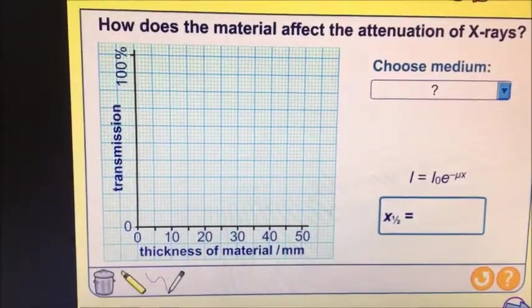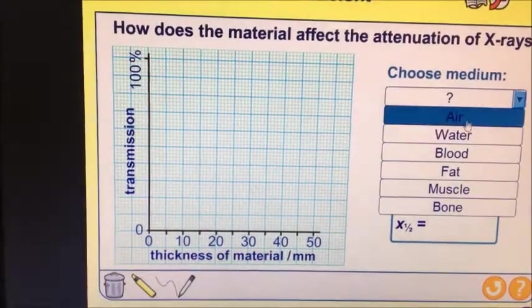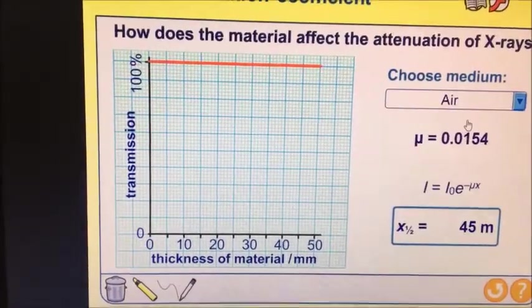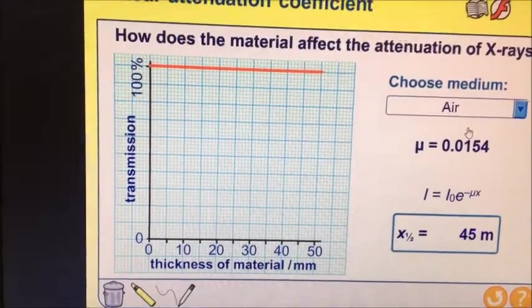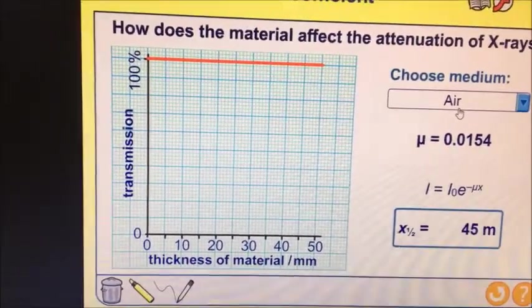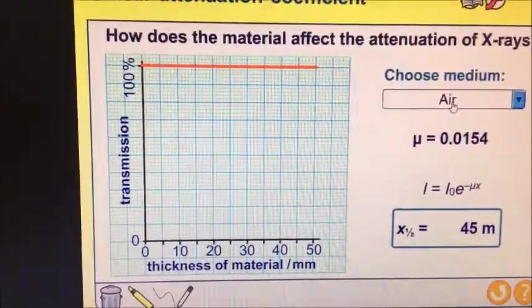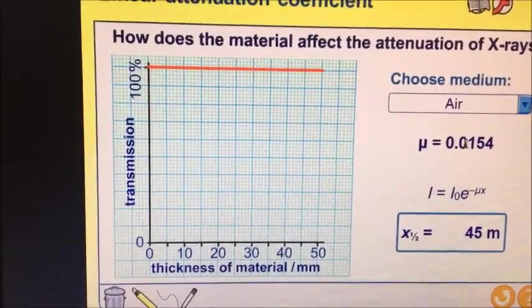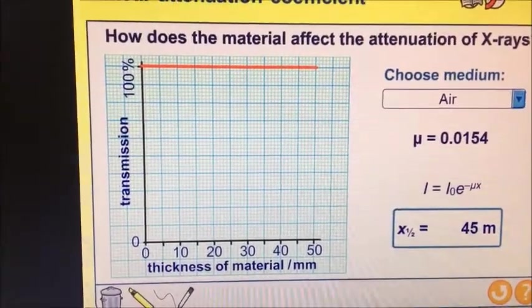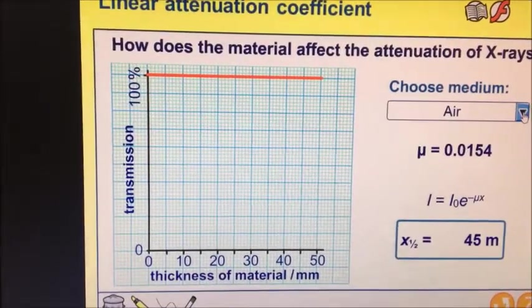So I'm going to start here by choosing air. Now, unsurprisingly, air doesn't do a whole lot to the amount that transmits through. On the y-axis there we have transmission—that means the amount that passes through the air. In other words, air barely does anything to it at all. And looking at this graph, it does nothing at all. So let's take a look—and it's got a value nonetheless of μ = 0.0154.